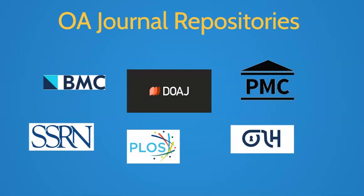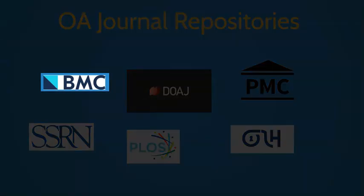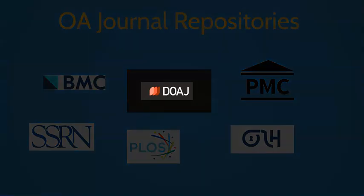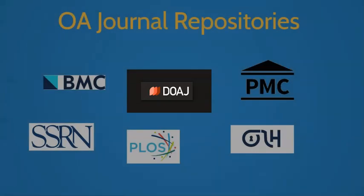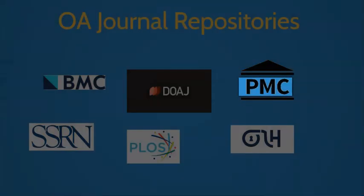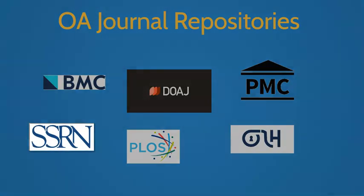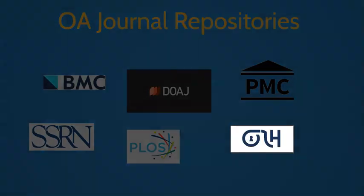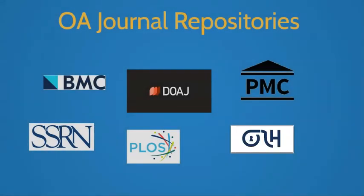One way to identify open access journals is to become familiar with some of the more popular open access journal repositories, such as Biomed Central, Directory of Open Access Journals, PubMed Central, Social Science Research Network, PLOS One, and Open Library of Humanities.